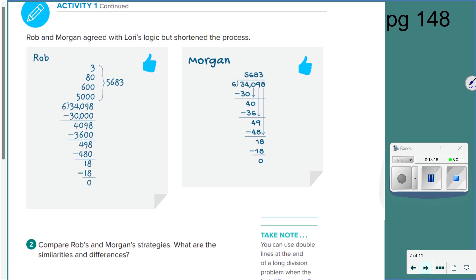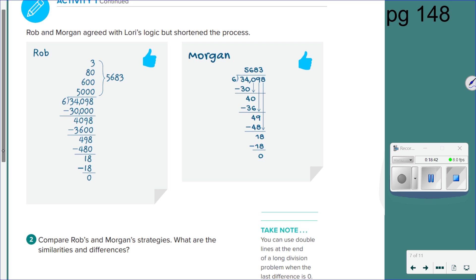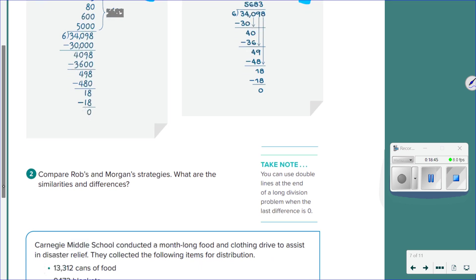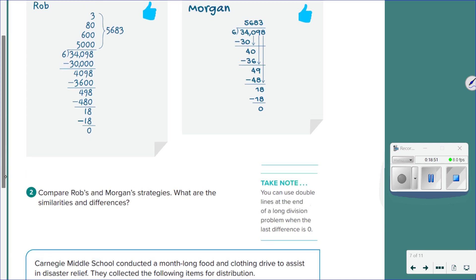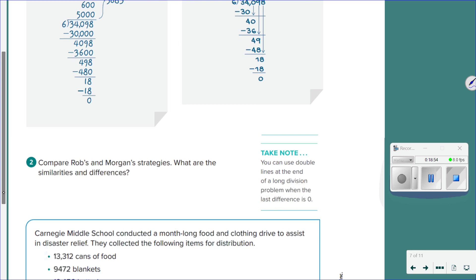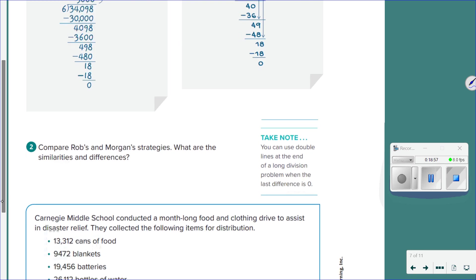Let's go ahead and go to the next page. 148. Now we're going to talk about Rob and Morgan. Five. We know they're both correct because they both have thumbs-ups. Yes? What they want you to do, I'll wait. What they want you to do is to compare them. How are they similar and how are they different? So go ahead and compare both of their strategies, take a couple minutes to look at them and tell me how they are similar and how they are different. You have about two minutes and then we will talk about it.